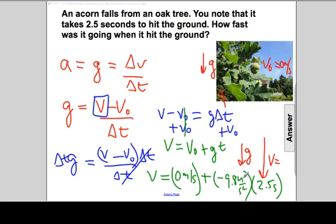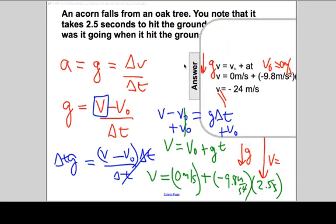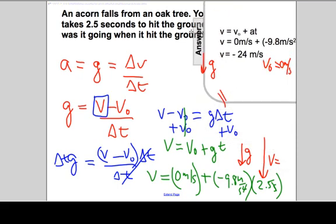When we do acceleration times time, it gives us the delta v, because the seconds will cancel the second squared. And when we reveal the answer, it's the product of 9.8 and 2, which is 24 meters per second. But why negative? Why is this going to be negative 24 meters per second?